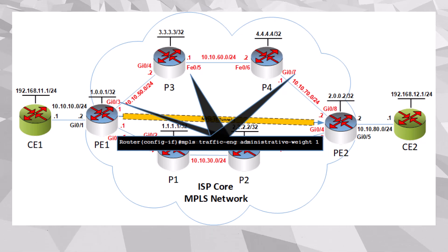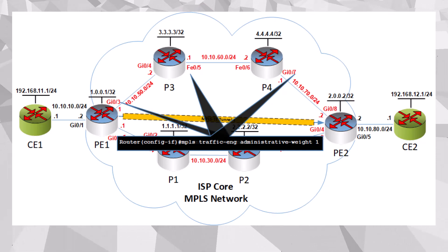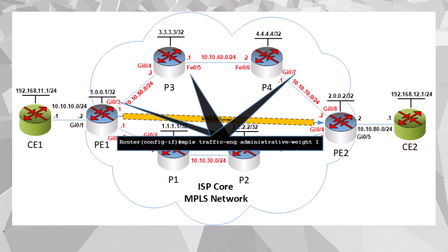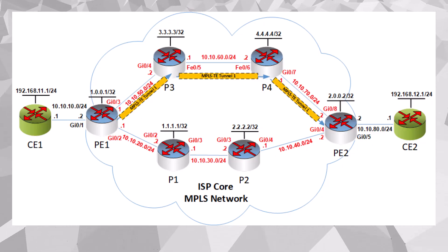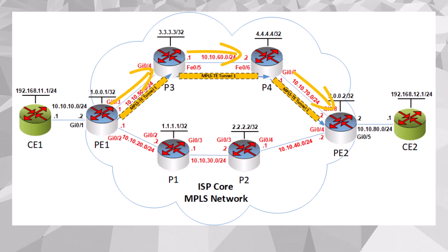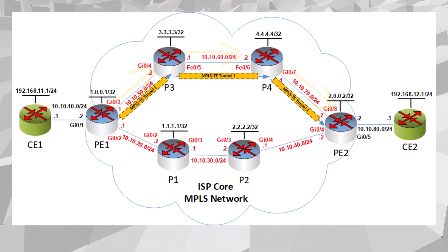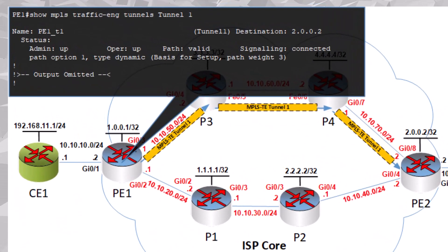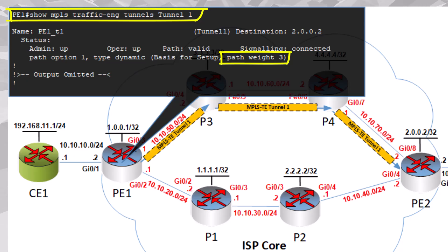The result is that the TE tunnel, which uses the TE metric to determine its path, will now go via P3 and P4. We can actually look at the information about the specific tunnel to see the path weight that has been assigned. The path weight shown is three, which is the cost of the three links that must be traversed to reach the tail-end router.